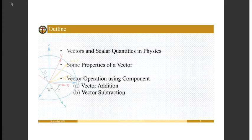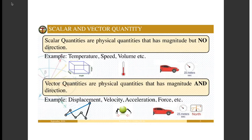We have vector addition and vector subtraction. Vectors are very important — we are always dealing with vectors in physics. Almost all of the quantities in physics are vectors. So what are the differences between a scalar quantity and a vector quantity? If we are talking about scalar quantities, these are the physical quantities that do not need a direction to completely describe them.